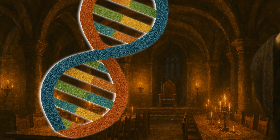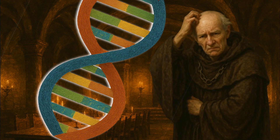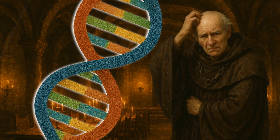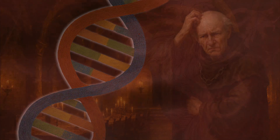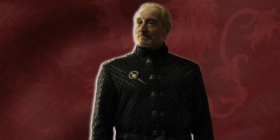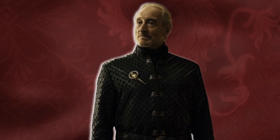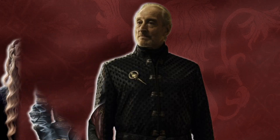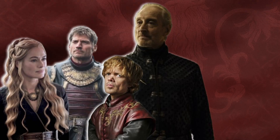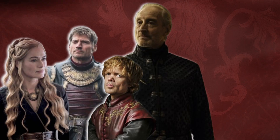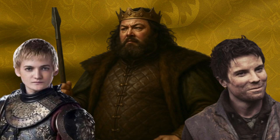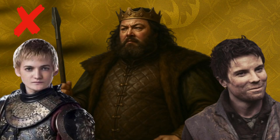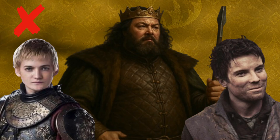Much like our own ancestors, the people of Westeros may not have known about the specifics of DNA or sequencing, but they do understand the core principle of genetic inheritance. Traits are passed down from one generation to the next. One of the ways through which they verify this assumption is by observing hair color.